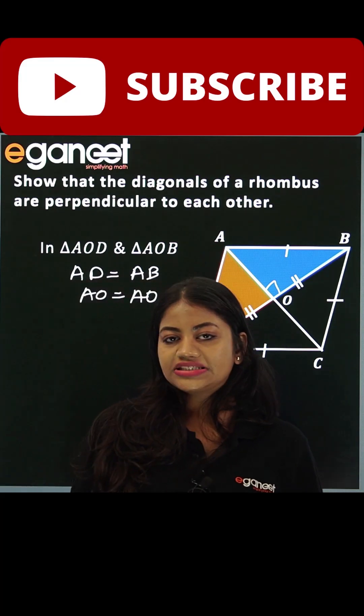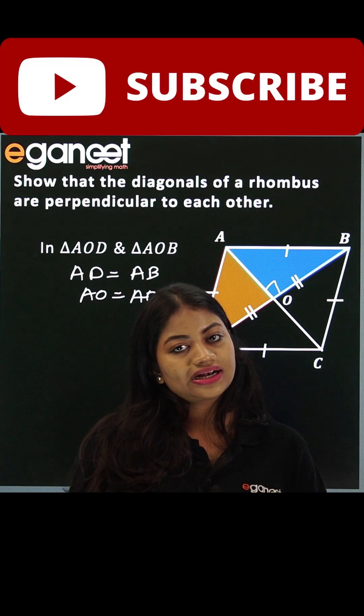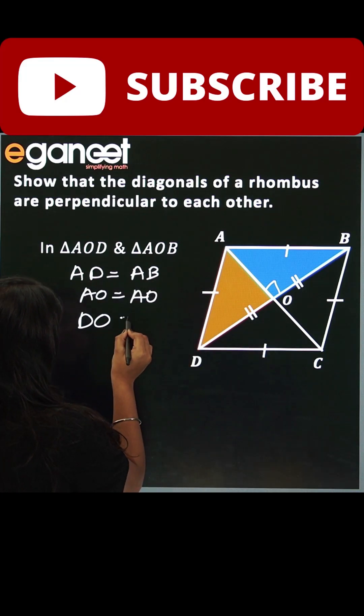Now as we know that every rhombus is a parallelogram, and diagonals of a parallelogram bisect each other. Therefore, DO will be equal to BO.